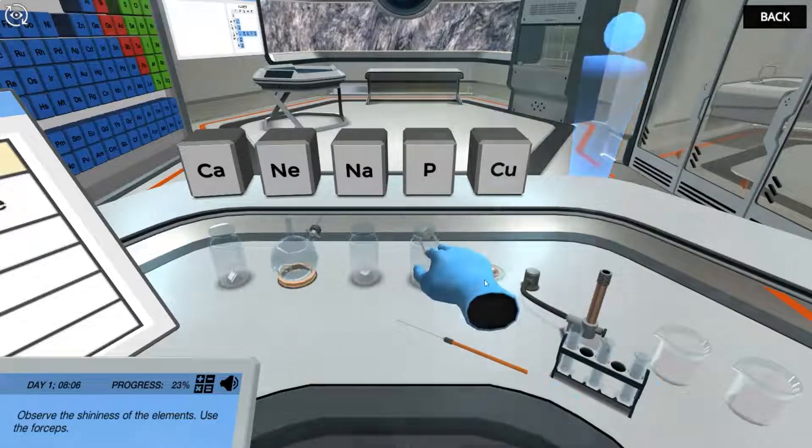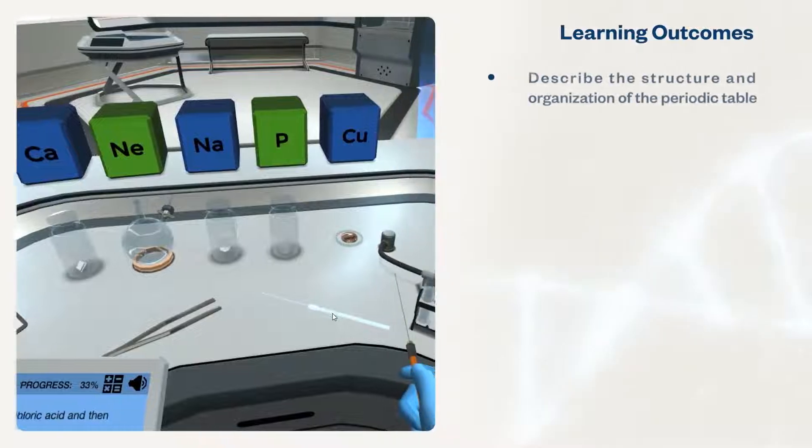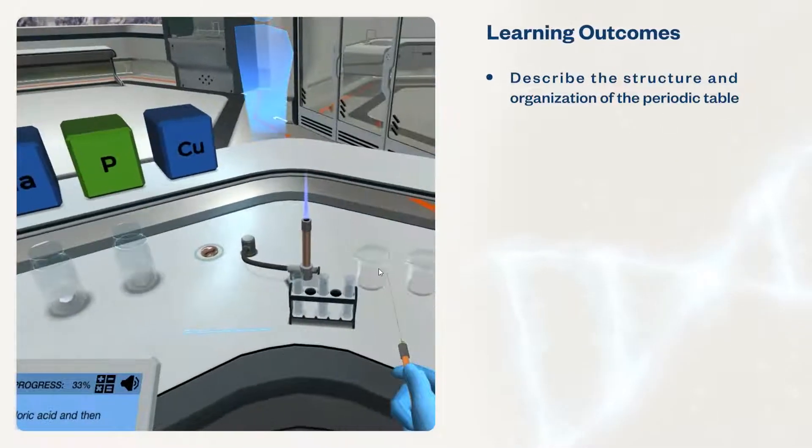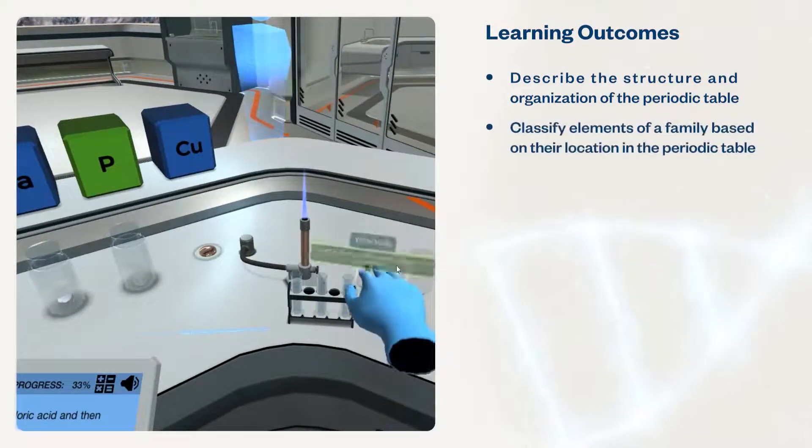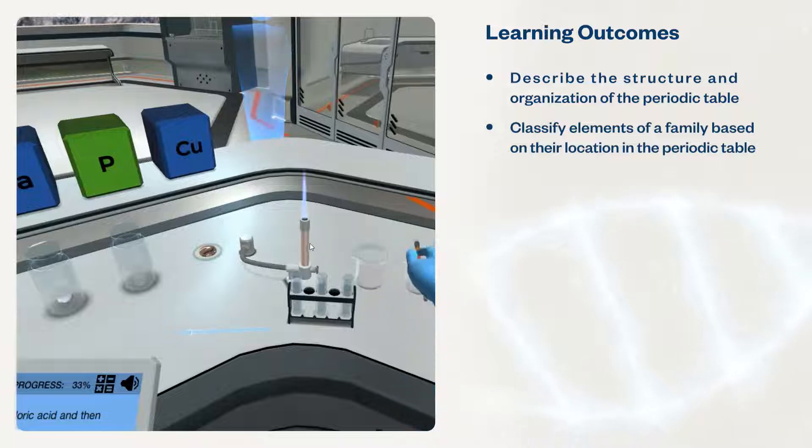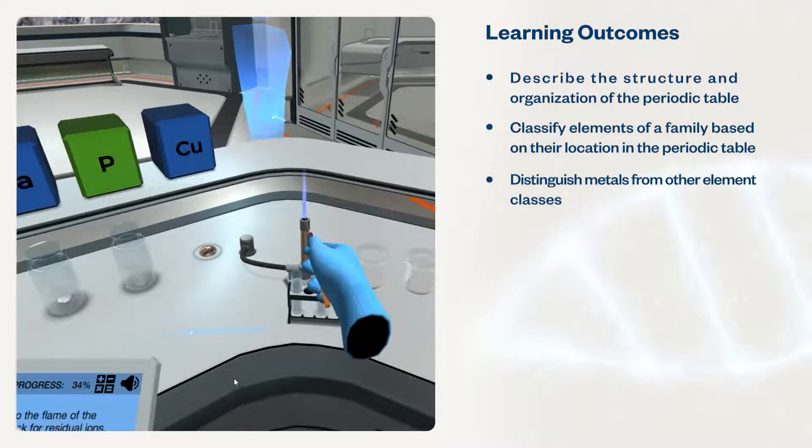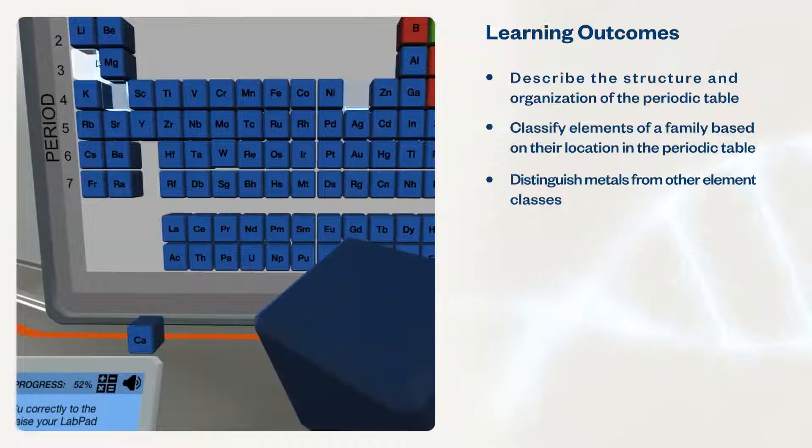These simulations will help students describe the structure and organization of the periodic table, classify elements of a family based on their location in the periodic table, and distinguish metals from other element classes based on typical characteristics.